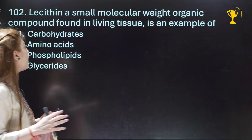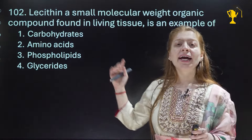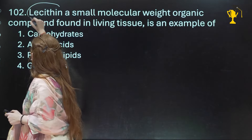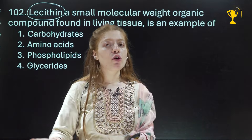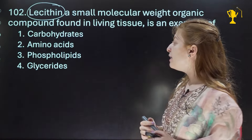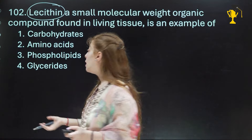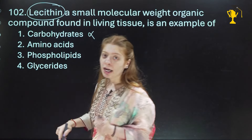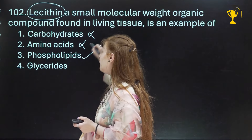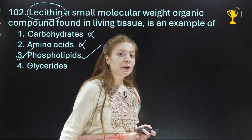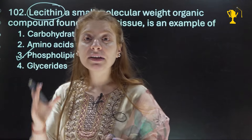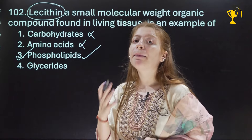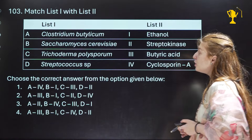Question 102: 'Lecithin is a small molecular weight organic compound found in living tissue.' This is from biomolecules. Lecithin is basically a type of phosphoglyceride — it is a group of phosphoglycerides, so lecithin is a phospholipid. The options include carbohydrate and amino acid, but it will be phospholipid. In the biomolecules chapter, in the lipids paragraph, the last line gives the example of phospholipid as lecithin.